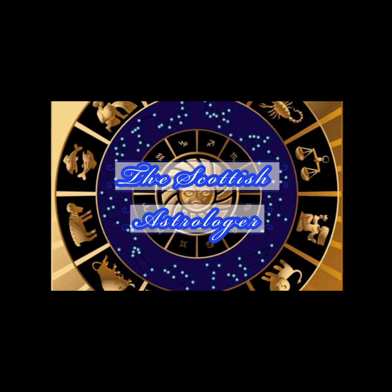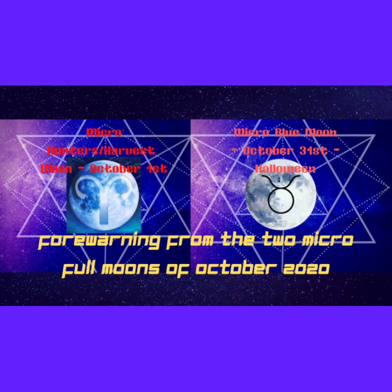Welcome to the channel, I'm the Scottish Astrologer and in this video I want to talk about the importance of the two upcoming micro full moons in the month of October and the major warning they are given to humanity, primarily regarding our food security. The first of these two full moons takes place on the 1st of October and is a micro full moon, the Hunters and Harvest Moon 2020, and it takes place in 9 degrees tropically of the zodiac sign of Aries.